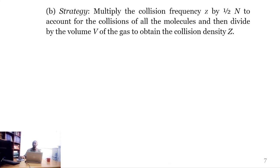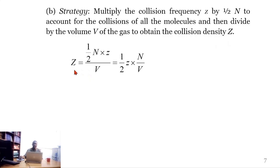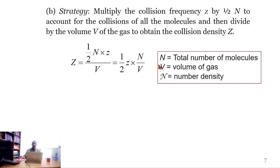The strategy for Part B is to multiply the collision frequency z (small z) by half times the total number of molecules, to account for the collisions of all molecules, then divide by the volume V of the gas to obtain the collision density, capital Z. So capital Z equals one-half times N times small z, divided by volume. Here, N is the total number of molecules, V is the volume of the gas, and the stylized N represents the number density.